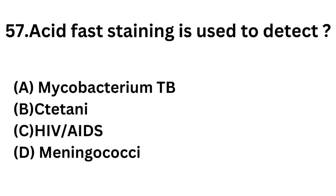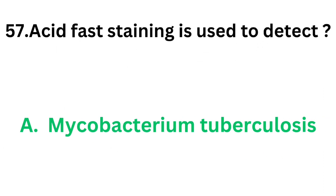Question number 57: Acid fast staining is used to detect. Option A: Mycobacterium tuberculosis. Option B: Clostridium tetani. Option C: HIV/AIDS. Option D: Meningococci. We know that acid fast staining is done for acid fast organisms. Among these options, only one acid fast bacterium is listed — that is Mycobacterium tuberculosis. So acid fast staining is used to detect Mycobacterium tuberculosis.